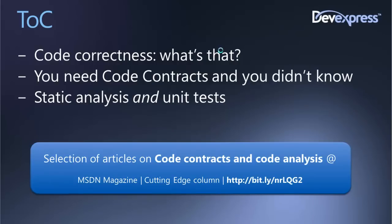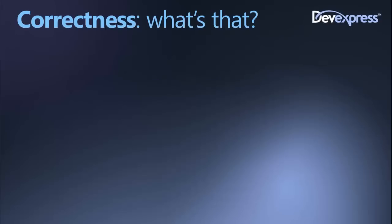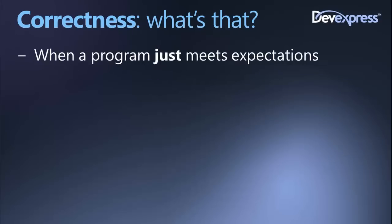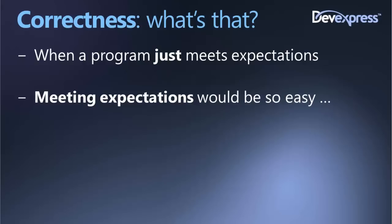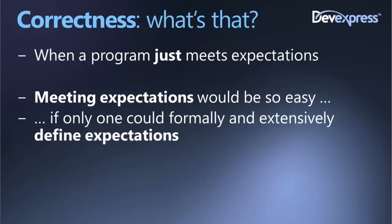Let's start having a look at the foundation of code correctness and related .NET technologies. In abstract terms, correctness is when a program just meets expectations. But what are expectations? Meeting expectations would be so easy if only one could formally and extensively define expectations. This is the root of most problems we have today in software, because the complexity of software we face today has grown significantly, especially in the .NET space compared to the Java space.